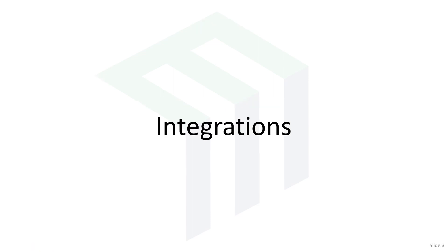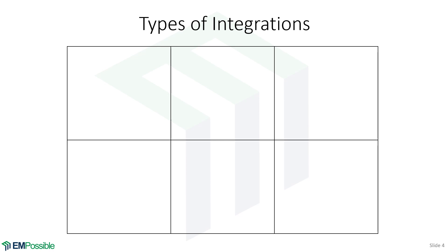Integrations. I'm going to identify six types of integrations that we tend to do in electromagnetics. The first is an ordinary line integral. That means we have a starting point and an end point that are not necessarily the same, and we integrate along some line.